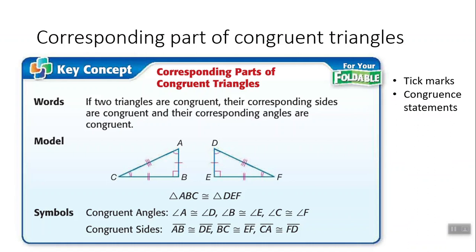Corresponding parts of congruent triangles: if two triangles are congruent, their corresponding sides are congruent and their corresponding angles are congruent. The first statement here is the congruence statement for the triangle, which reads that triangle ABC is congruent to triangle DEF. Pay really close attention to the order of the letters in this statement, because the order of the letters will tell us everything about the two triangles.